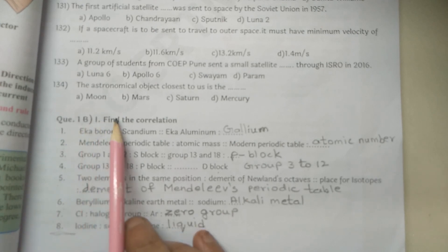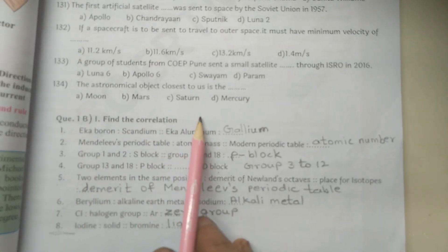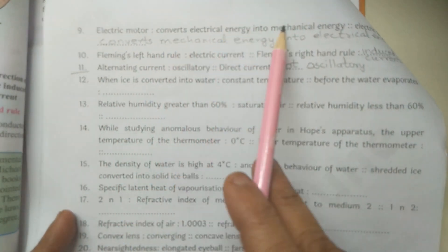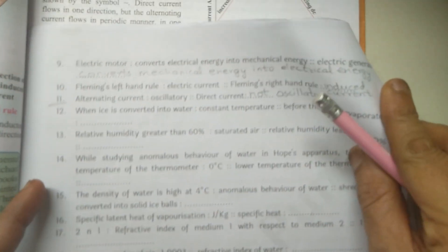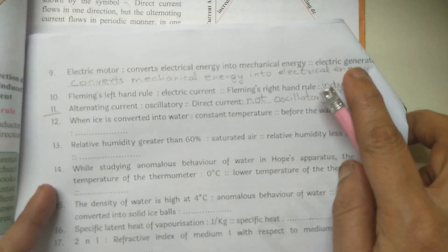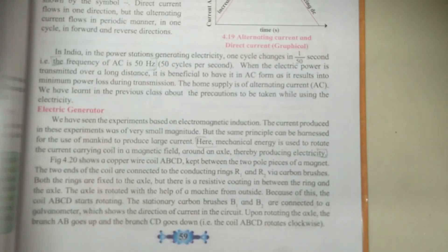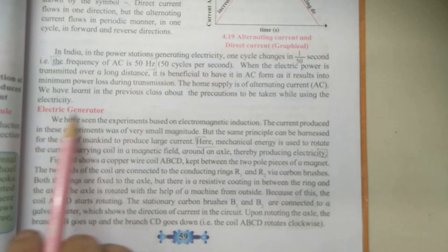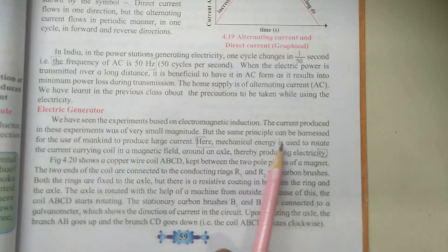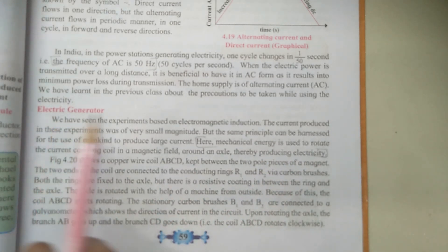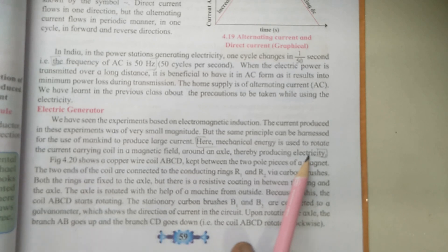Question 1b - Find the Correlation. Lesson number 4 questions start from question number 9. Q9: Electric motor converts electrical energy into mechanical energy - then what does an electric generator do? An electric generator does just the opposite - it converts mechanical energy into electrical energy, as given on page number 59. Mechanical energy is used to rotate the current-carrying coil in a magnetic field around an axle, thereby producing electricity.